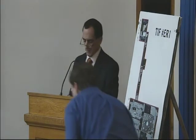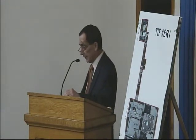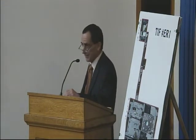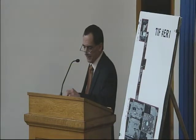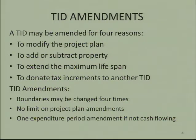TID amendments: a TID may be amended for four reasons — to modify the plan, to add or subtract property, to extend the lifespan, or to donate tax increments to other TIDs. We've done three of those in Sheboygan. Boundaries may be changed up to four times; there's no limit on project plan amendments; and there's one expenditure period amendment allowed if it's not cash flowing.